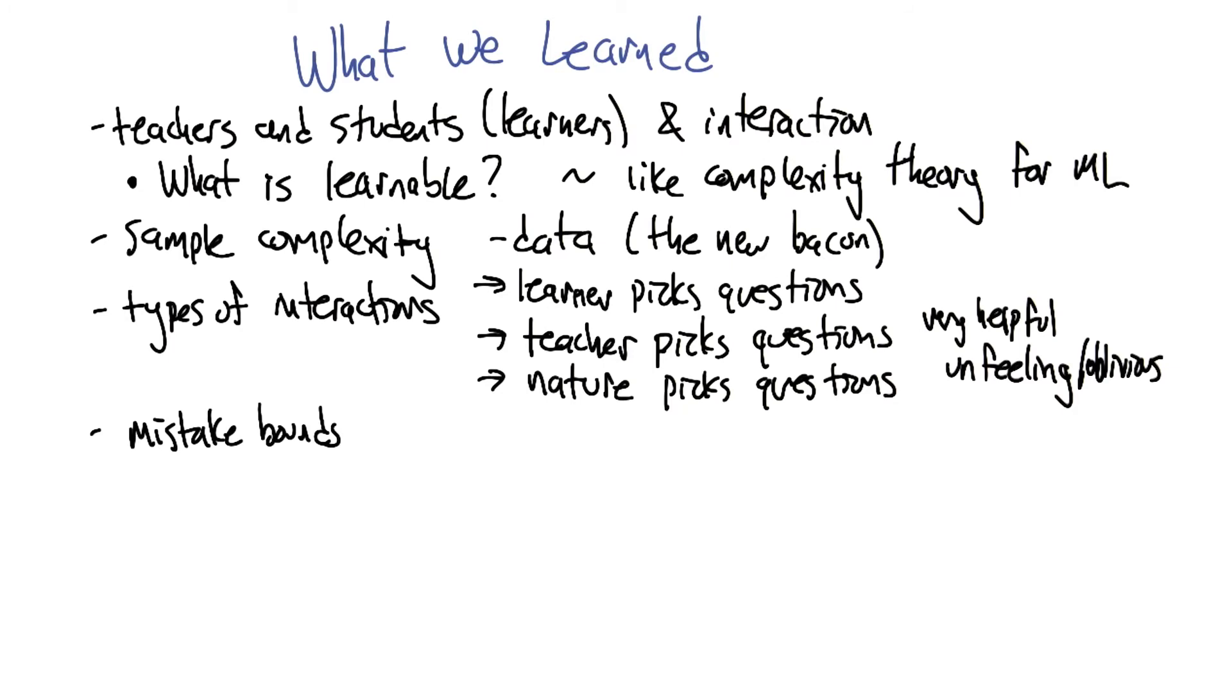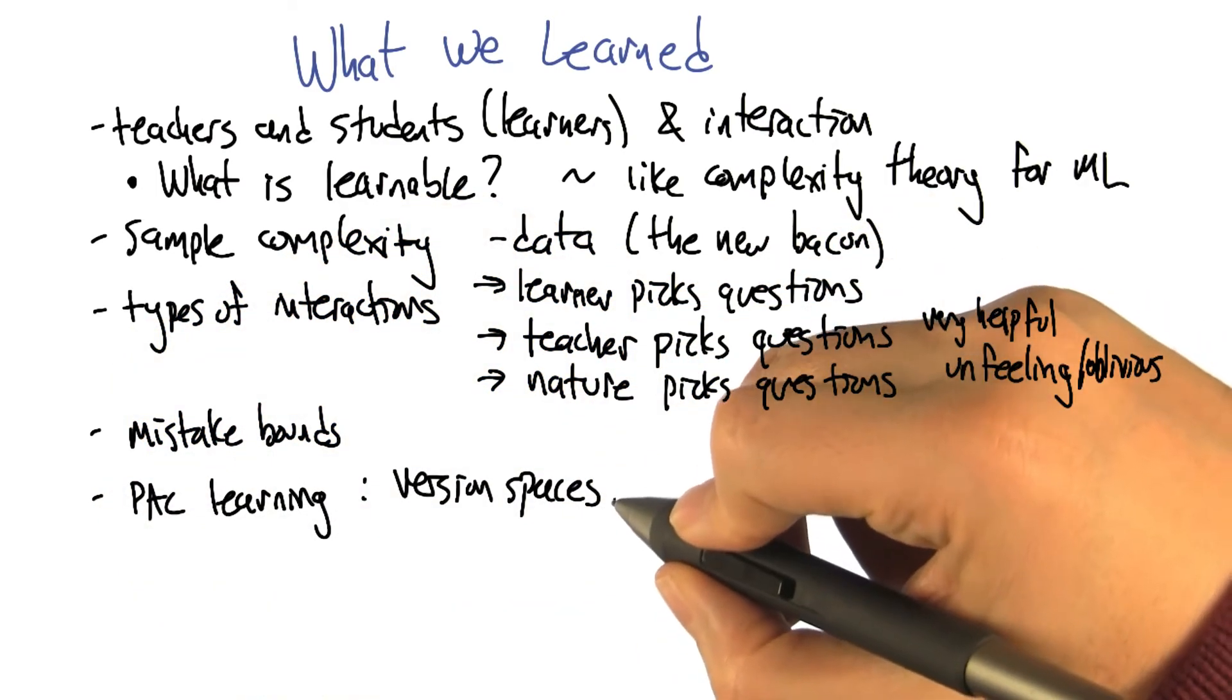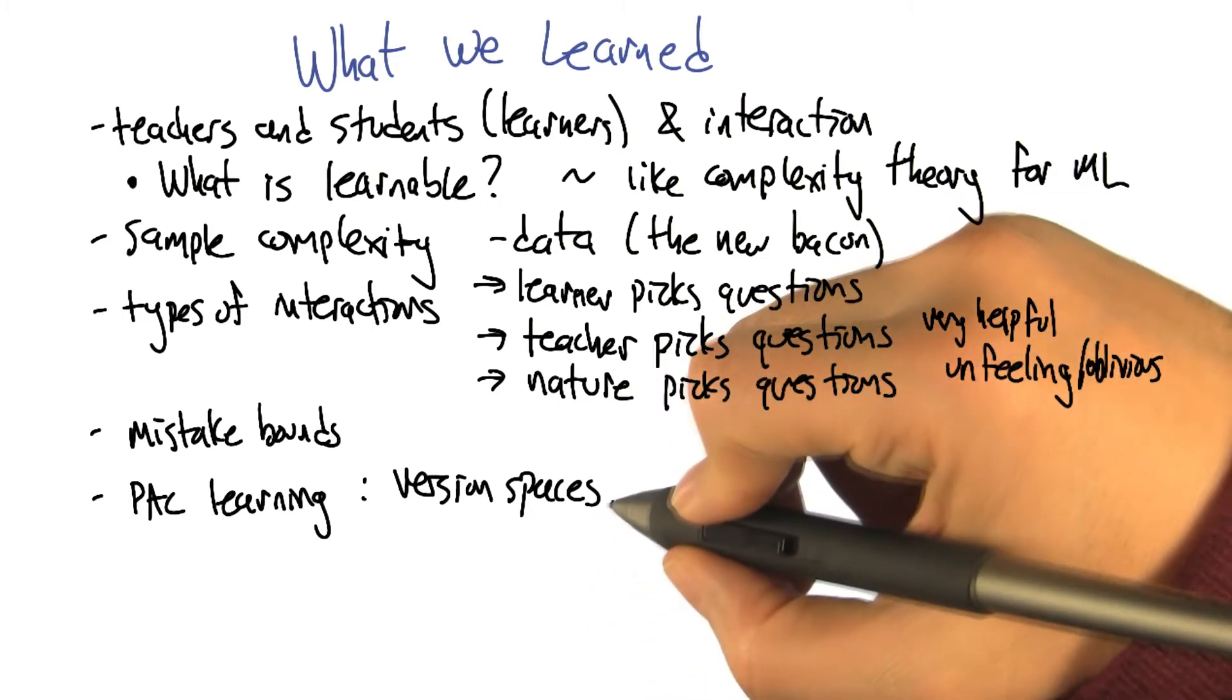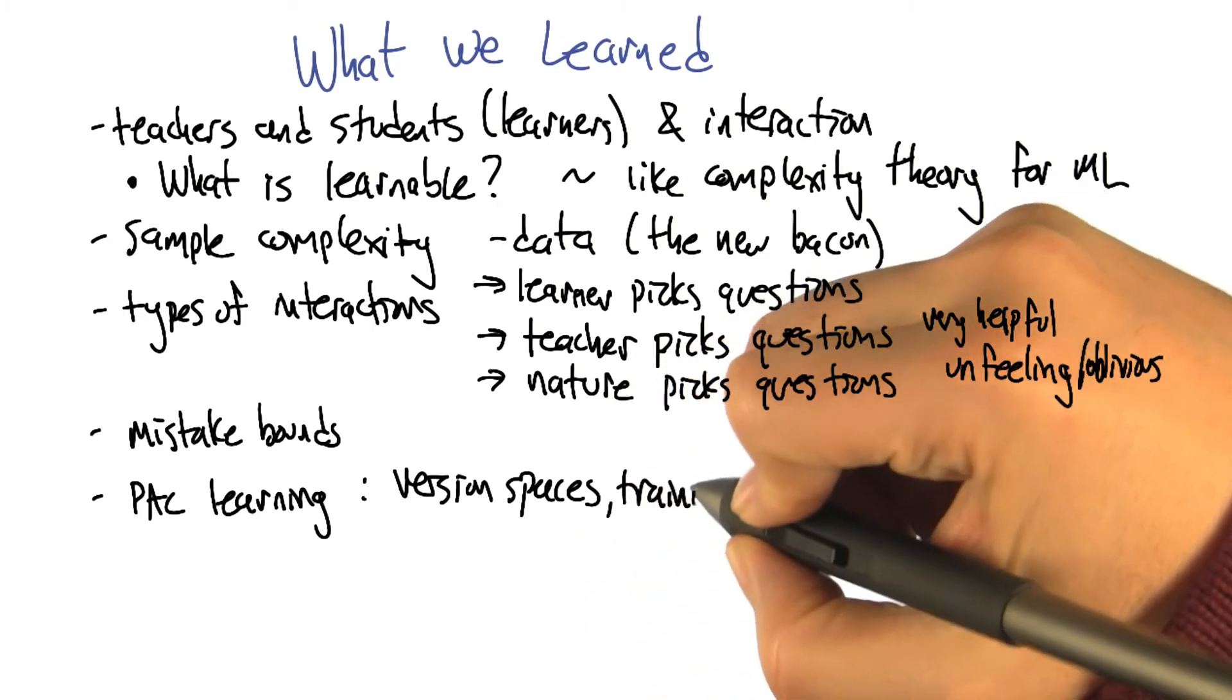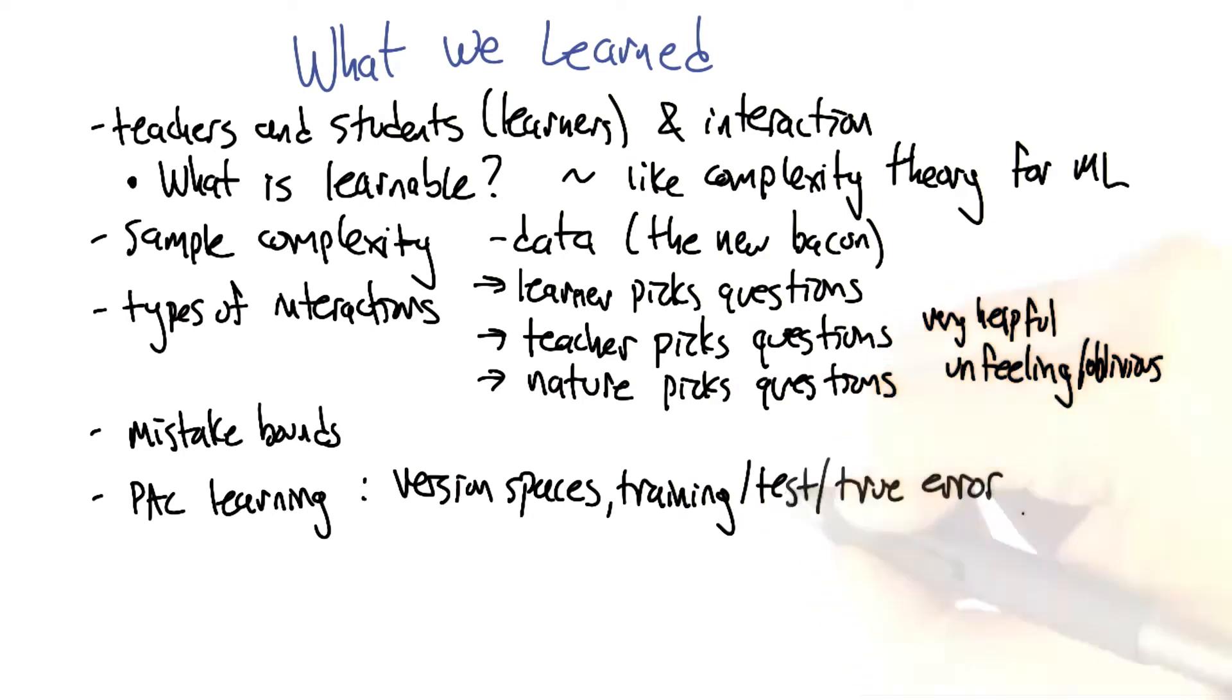And then the bit that I like a lot is we started talking about version spaces and PAC learnability. And what really worked for me with that was this distinction between training error, which we've talked about a lot, test error, which is how we've been thinking about all of the assignments we've been doing, and true error. And true error in particular got connected back to this notion of nature, the distribution D.